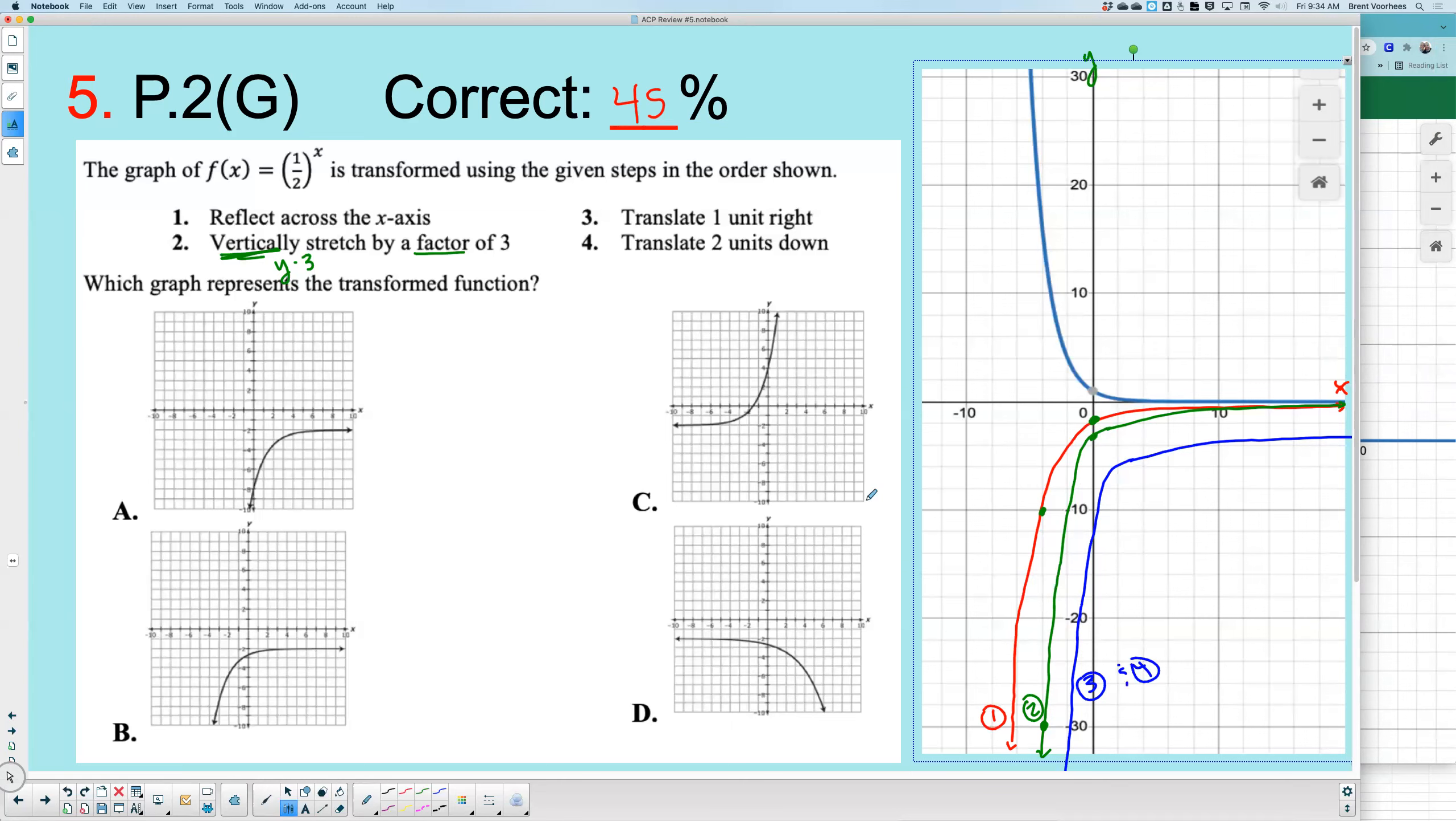Which answer choices can we eliminate outright that aren't even close? Obviously, C and D are way wrong. So you're just looking at these two. And even if you only got graph two on your own paper, if it moves right and down, you can tell real quickly which one it'll be. If it's got to move right and down, the answer would be, this one moved to left. This one moved right. So you can kind of say this one's moving left. This one moved right. The answer is going to be A.